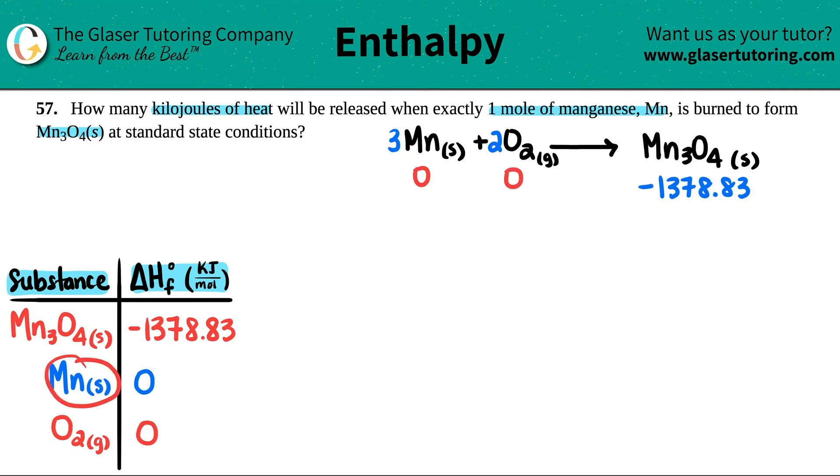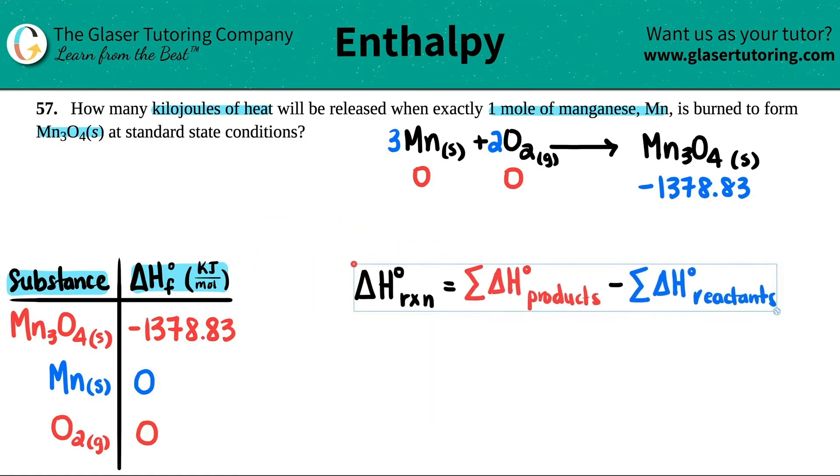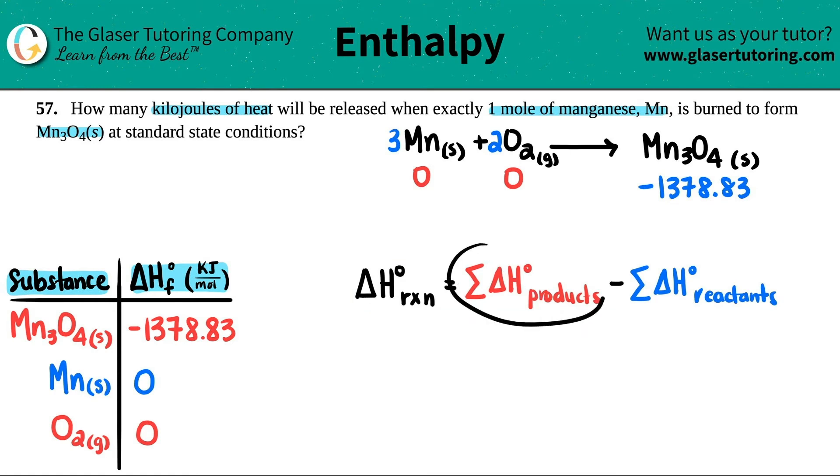Any delta H for free elements or diatomics, they're always going to be zero. Now what's our delta H formula? It's this right here: it's products minus reactants, the sum of all the products minus the sum of all the reactants. I'm going to switch the colors - these should be in blue because these are reactants, and this one should be in red because this is a product.